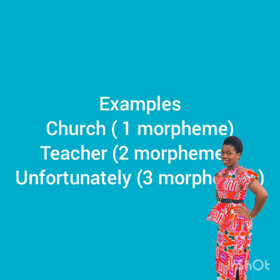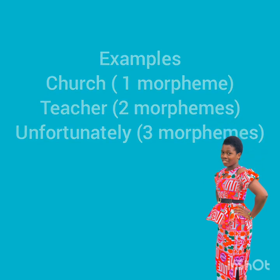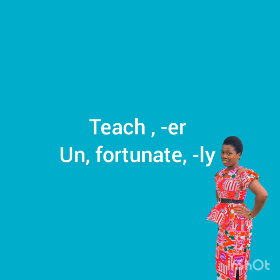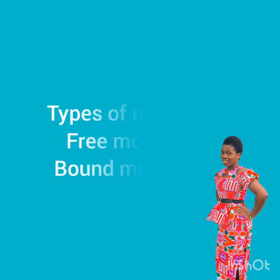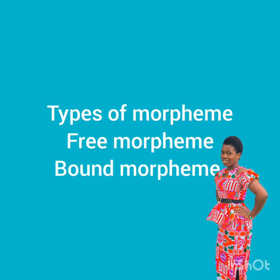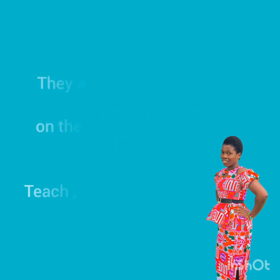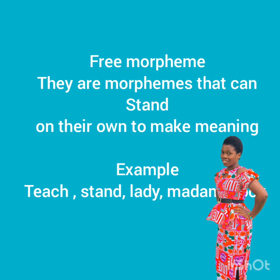A word like 'church' has just one morpheme. 'Teacher' has two morphemes, and 'unfortunately' has three morphemes. Let's talk about 'teacher': 'teach' is a morpheme and '-er' is also a morpheme — that gives us two morphemes in 'teacher.' Now let's go to the types of morphemes: free morphemes and bound morphemes.